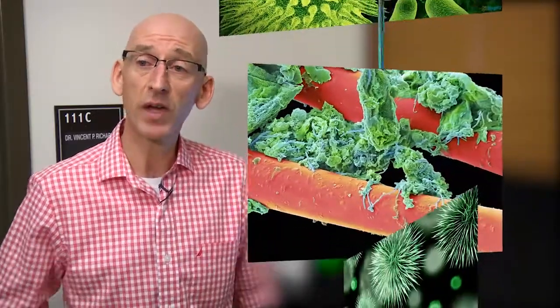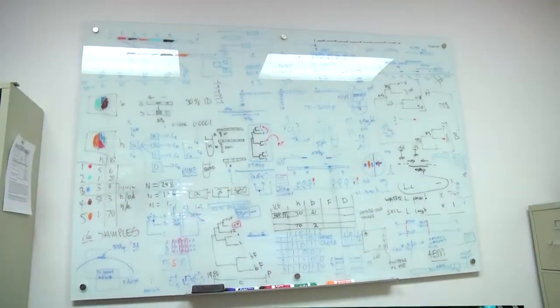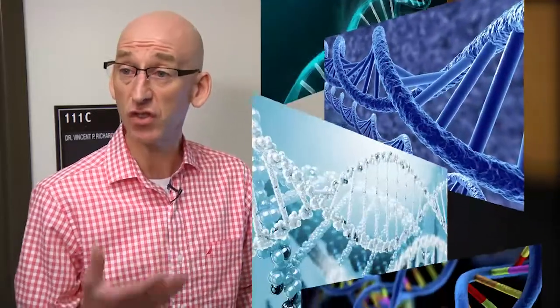We're going to use DNA and RNA sequencing to examine these different bacteria and determine how different they are at the genetic or more precisely at the genomic level. To do that, we're going to use a machine called a next generation DNA sequencer.